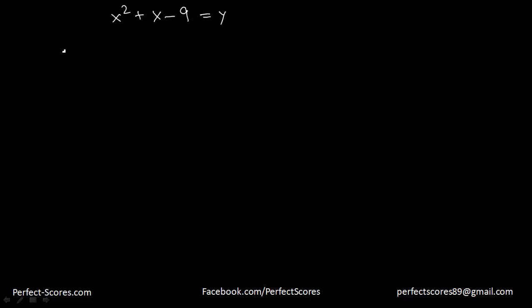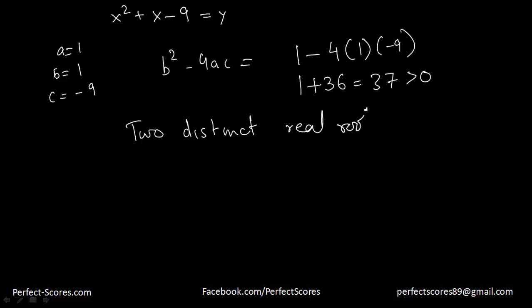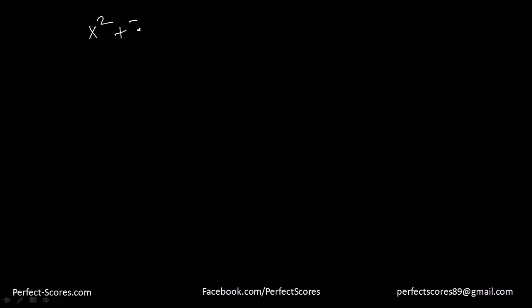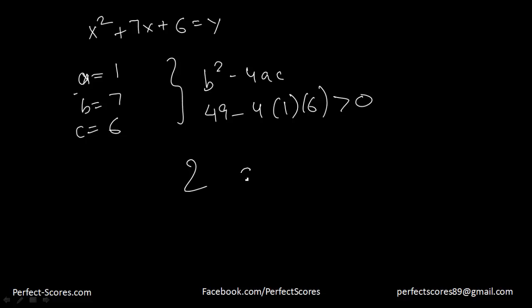Let's say I have the equation x squared plus x minus 9 equals y. Here a equals 1, b equals 1, c equals negative 9. So b squared minus 4ac equals 1 minus 4 times 1 times negative 9, which is 1 plus 36, which is 37. Since this is greater than 0, I am going to have two distinct real roots. Let's pick up another one: x squared plus 7x plus 6 equals y. Here a equals 1, b equals 7, c equals 6. b squared minus 4ac equals 49 minus 4 times 1 times 6, which is greater than 0 — two distinct real roots.